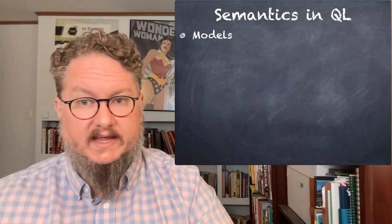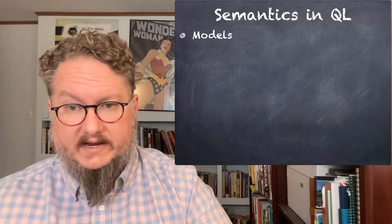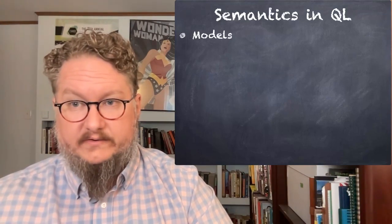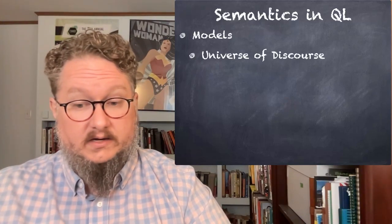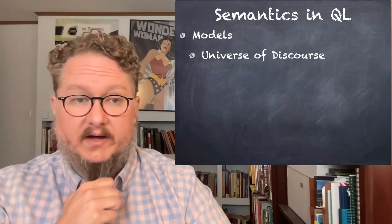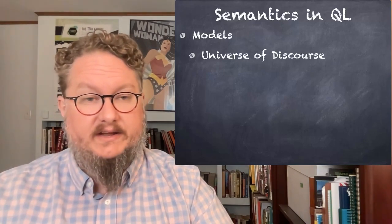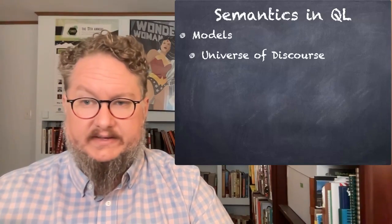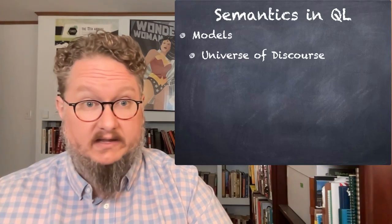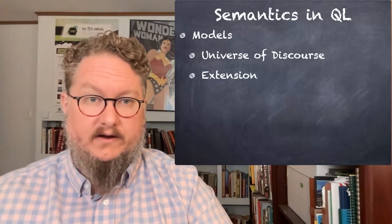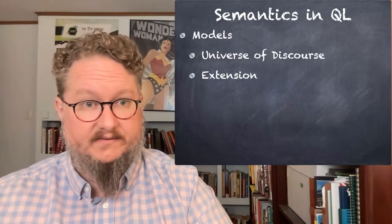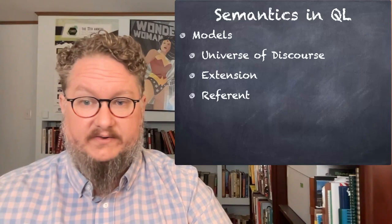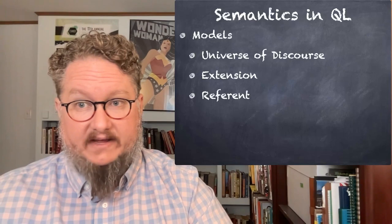Remember, we used a symbolization key in QL to help us interpret QL statements by assigning a meaning to the predicates and constants, and by specifying a universe of discourse. In a model, we still use the idea of a universe of discourse to specify the scope of quantification — what 'for all X' and 'there exists an X' are going to quantify over. But now, instead of making a general statement like 'all animals' or 'all people,' we're actually going to list the specific individuals in our universe of discourse — enumerate all of them for a model. Every predicate is defined by its extension — the set of things that the predicate applies to — and every constant is defined by its referent, the specific individual thing it refers to.